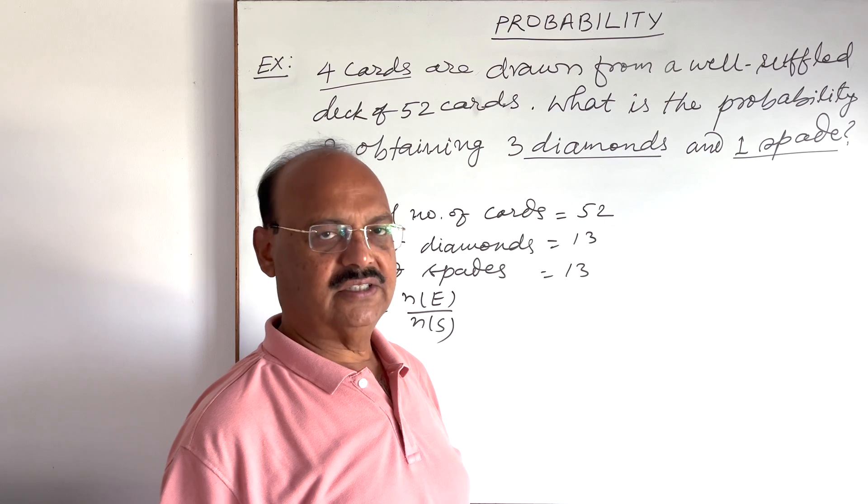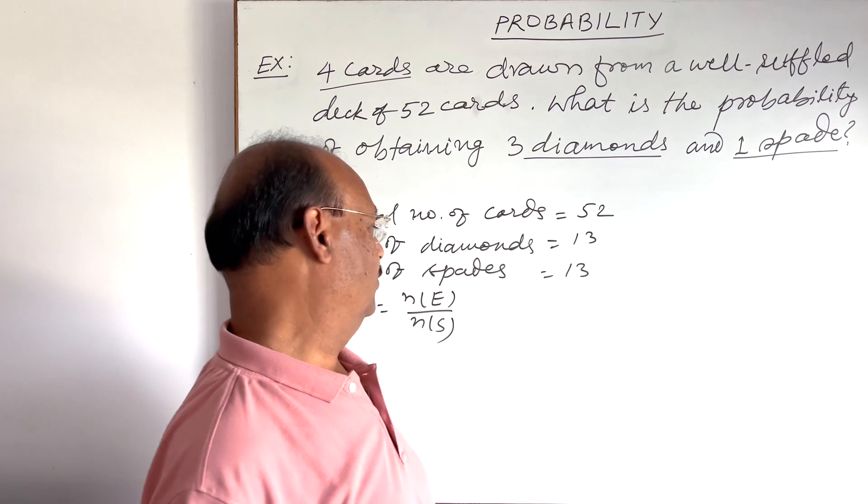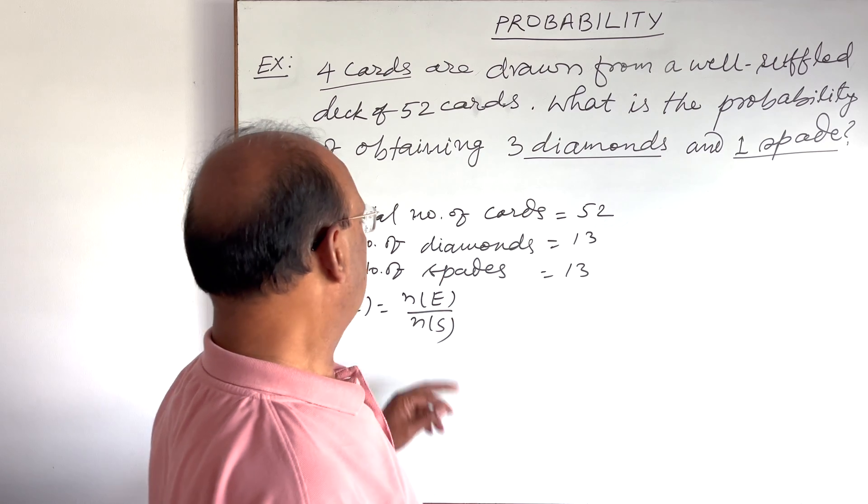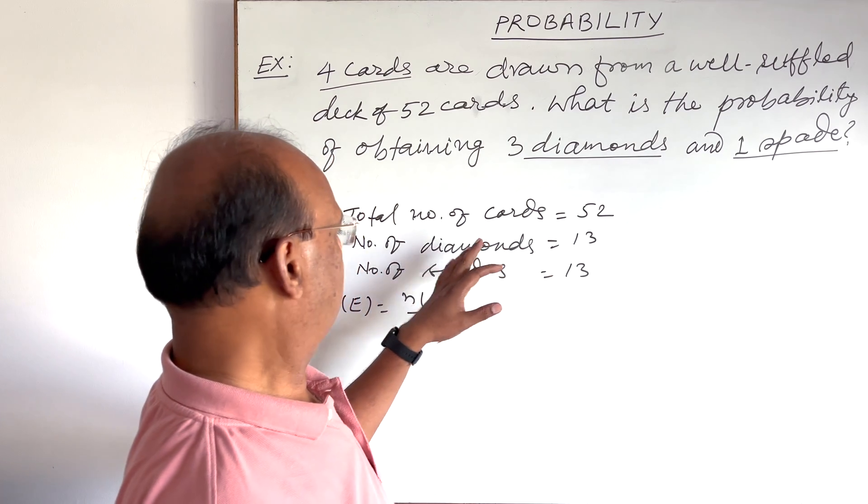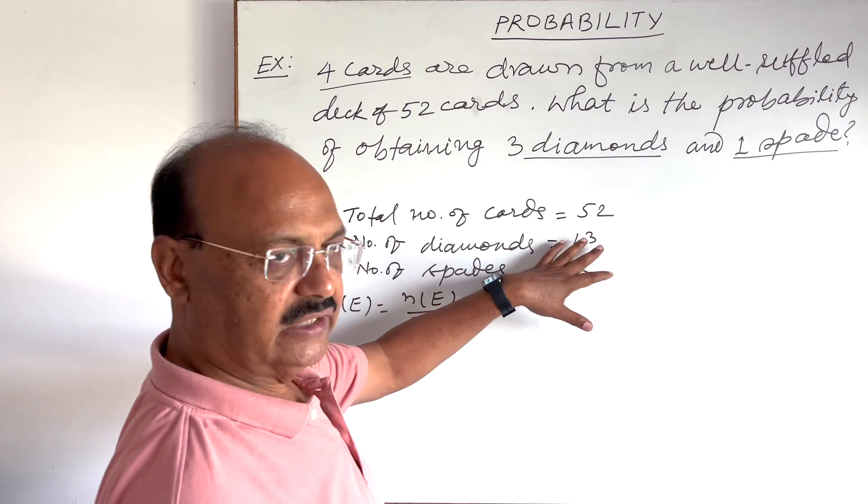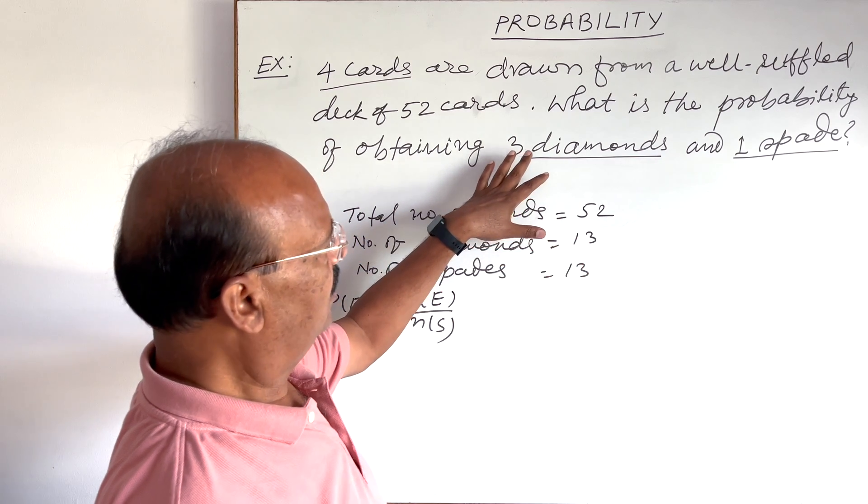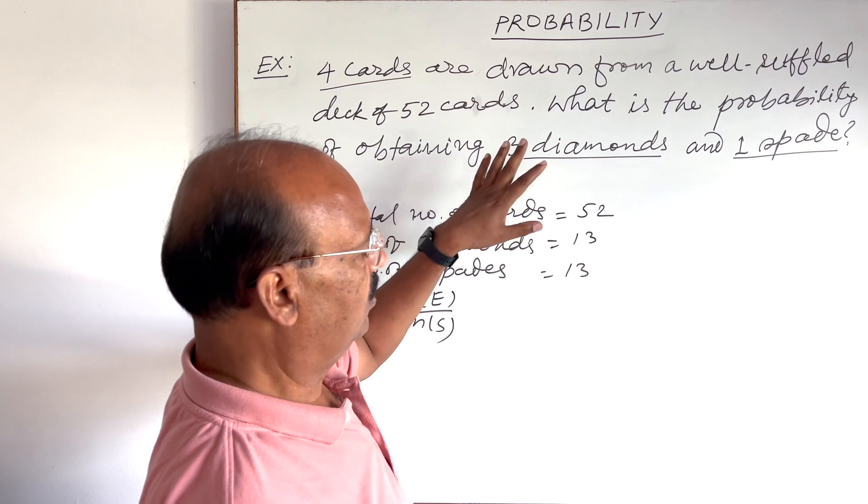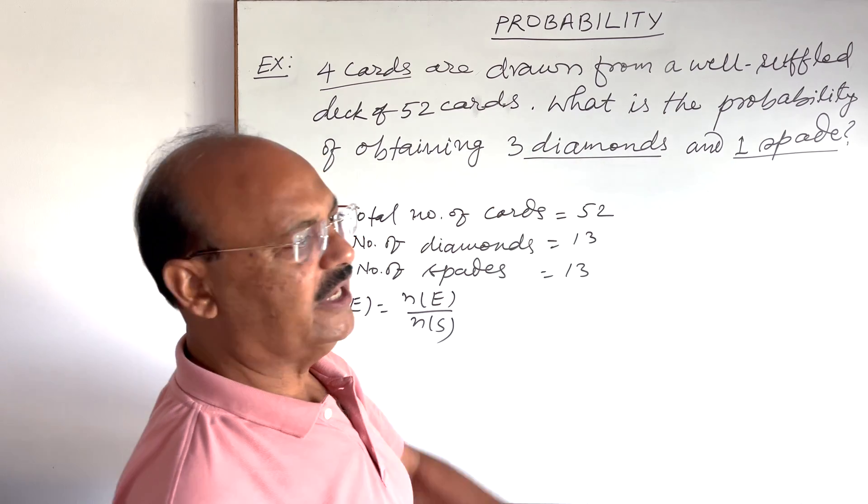And what event is here? Drawing four cards from a deck of 52 cards. And probability we should know is number of diamonds is total 13.